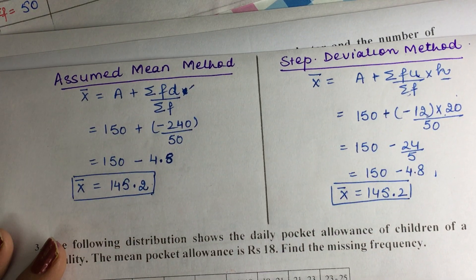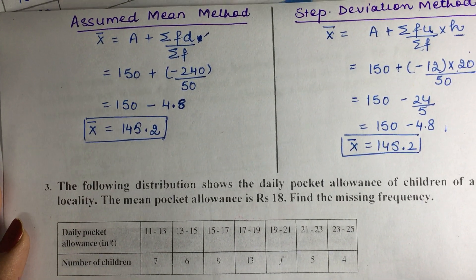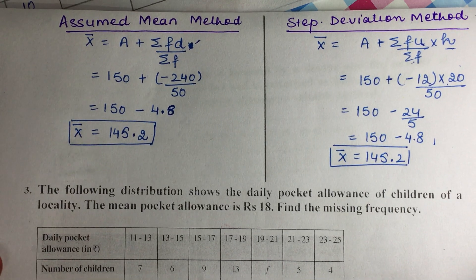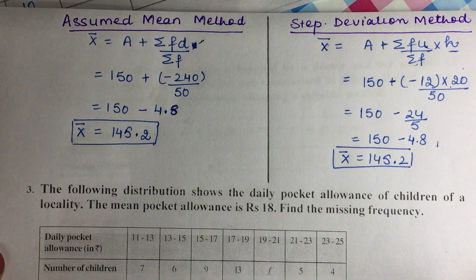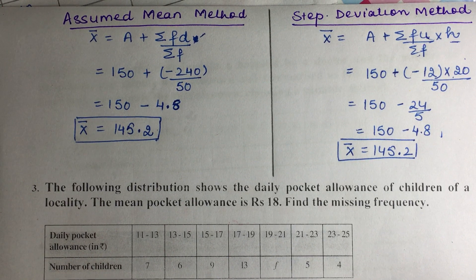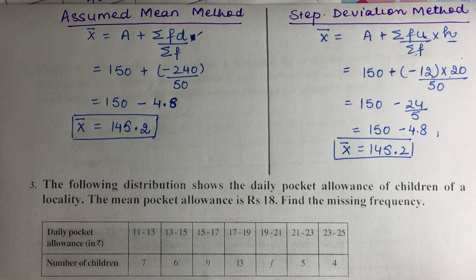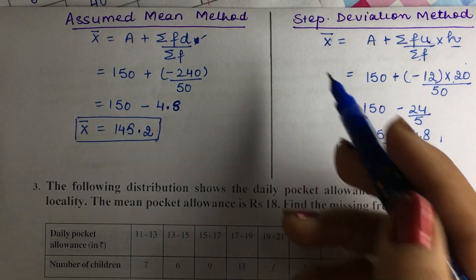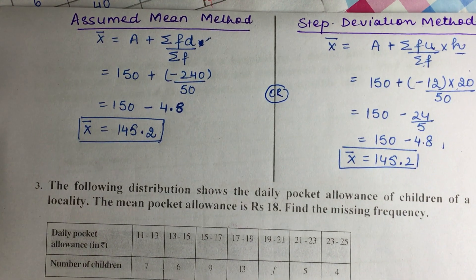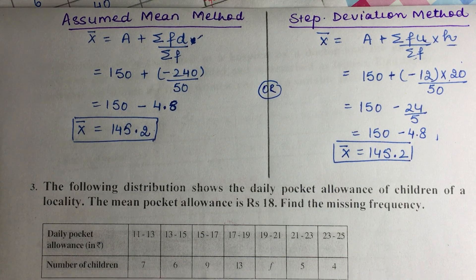The answer is the same by both the step deviation method and the assumed mean method. You only need to do one of the two methods — whichever is convenient for you. Sometimes the question says use step deviation or use assumed mean. Both methods have been explained; you only need to do one.